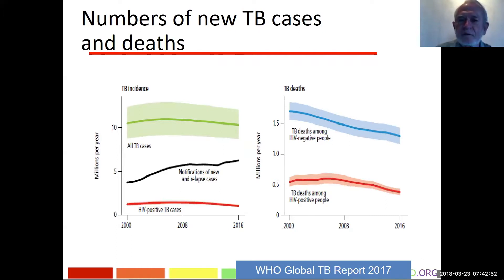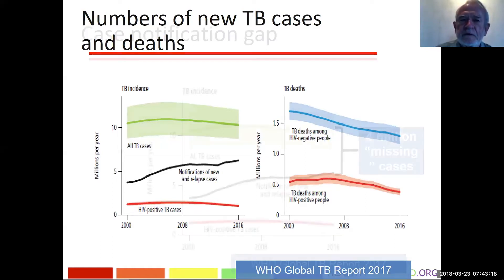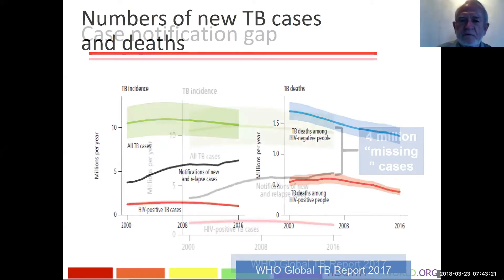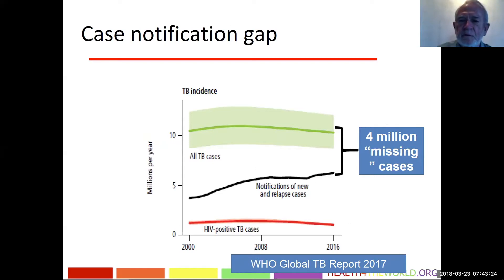Looking at the right-hand panel, deaths from 2000 through 2016 are shown — HIV-negative deaths in blue and HIV-positive in red — and the number of deaths is clearly going down rather steadily. This slide again highlights the gap between the number of cases notified, totaling about 6 million in 2016, and the WHO estimate of about 10 million in 2016.